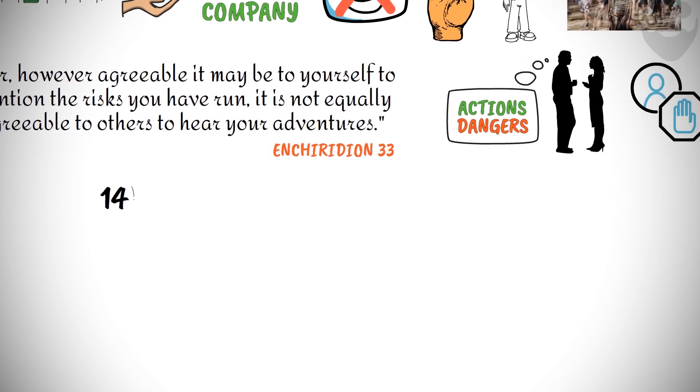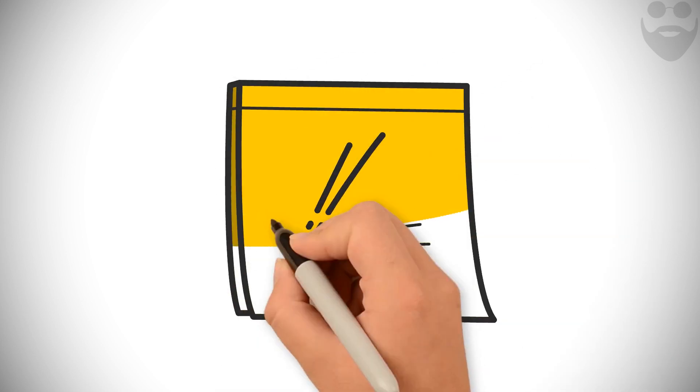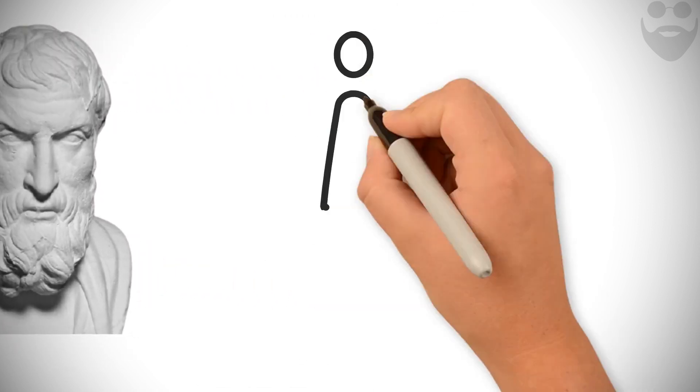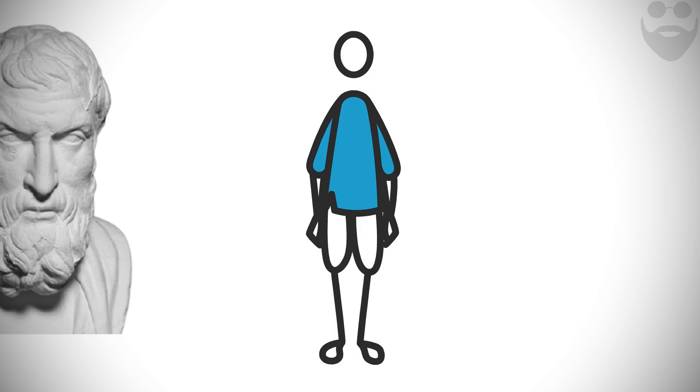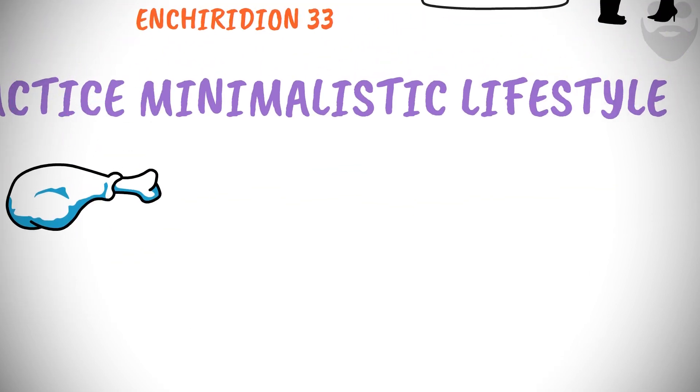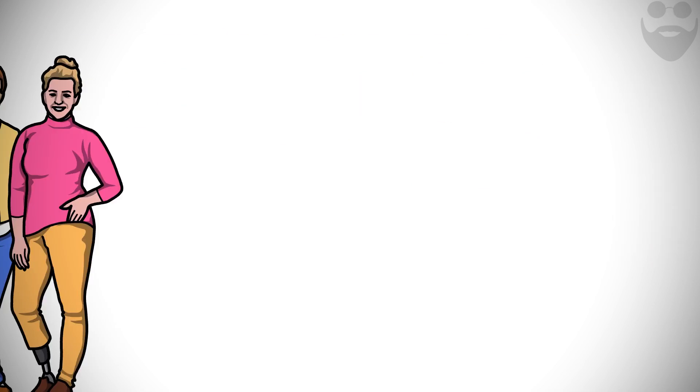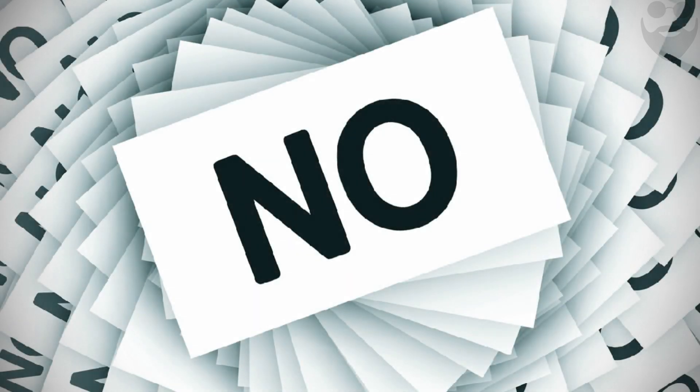14. Practice a minimalistic lifestyle. It's what we need today the most. Epictetus advised us centuries ago, Provide things relating to the body no further than mere use, as meat, drink, clothing, house, family, but strike off and reject everything relating to show. Enchiridion 33.